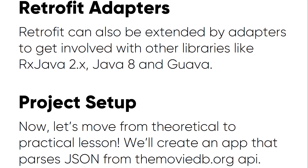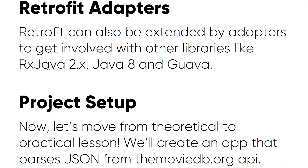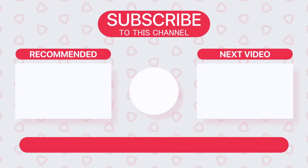Now let's move from the theoretical to the practical. We will create an app that parses JSON from the MovieDB.org API, and later on there are many APIs that we are going to parse. Stay tuned — I hope to see you in the next videos. Don't miss liking the video, rating us five stars on Udemy, hitting subscribe on YouTube, and keeping us making new tutorials with your comments. Thank you guys!